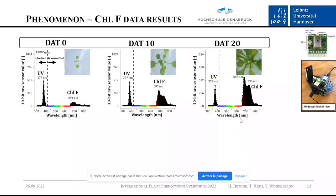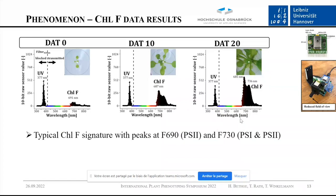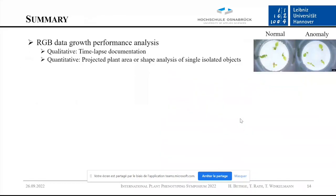The last thing I want to show is the chlorophyll fluorescence data. We used our microspectrometer with a UV-blocking filter in front. Over time, you see an increase in chlorophyll fluorescence and also two specific peaks derived from the photosystems, which can be used as a potential stress indicator.